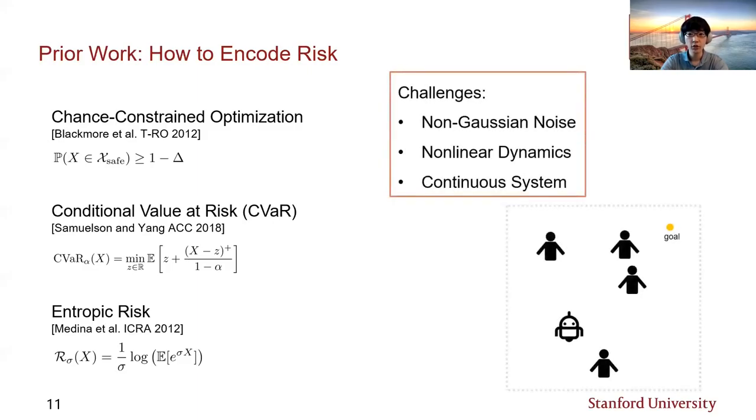While each formulation has advantages and drawbacks, in the crowd-robot interaction problem, we have to consider various factors, such as non-gaussianity, non-linearity, and continuity. Unfortunately, existing methods in chance-constrained optimization and CVAR optimization are not well suited to these kinds of systems. There also does not exist a method in entropic risk optimization that can overcome those challenges. In this work, we propose a tractable solution to this challenging entropic risk minimization problem.